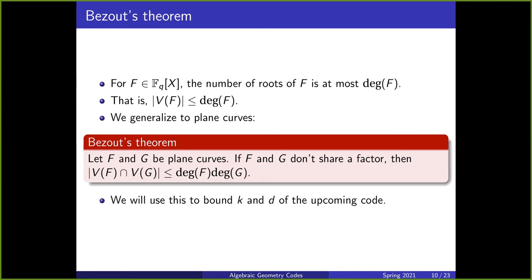We can generalize this principle to plane curves, and this is what Bezout's theorem does. Let f and g be polynomials defining two plane curves. If f and g do share a factor, then there can be many common zeros along that factor. But if they don't share a factor, Bezout's theorem says that the number of common zeros between f and g is at most the product of their degrees. Once we define this code, we're going to use this to bound k and d.